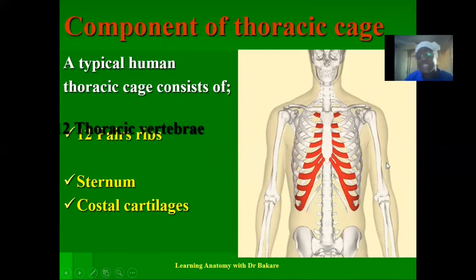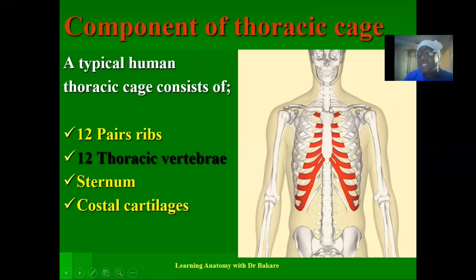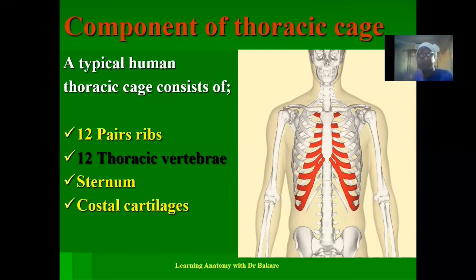Going further, we have the thoracic vertebra — 12 in number. These are small pieces of bone arranged one on top of each other. They are located in the posterior region of the thoracic cage, and this is the region where the ribs emerge from. We have the first to the twelfth thoracic vertebra, arranged to form the elongation seen in the posterior part of the thoracic cage.